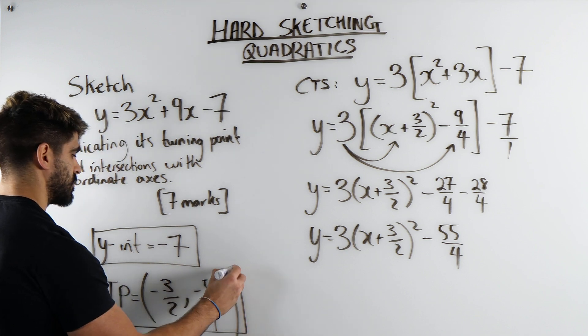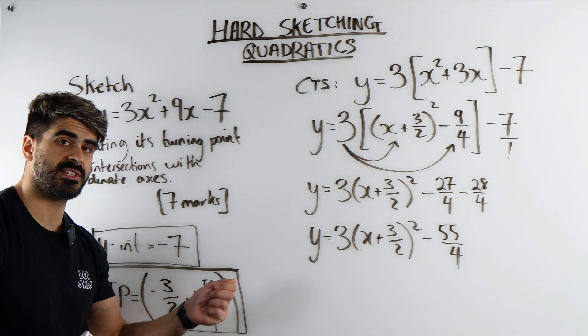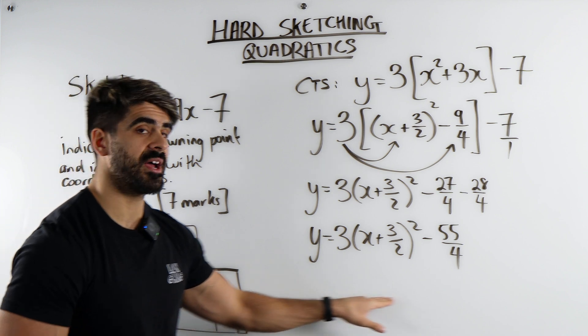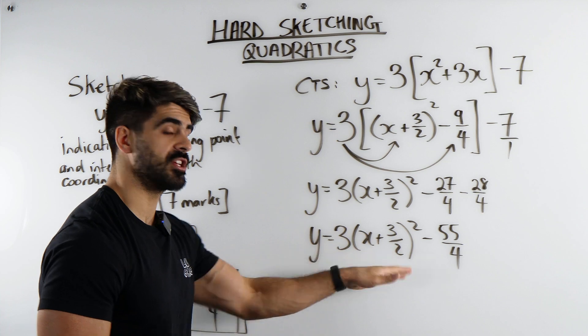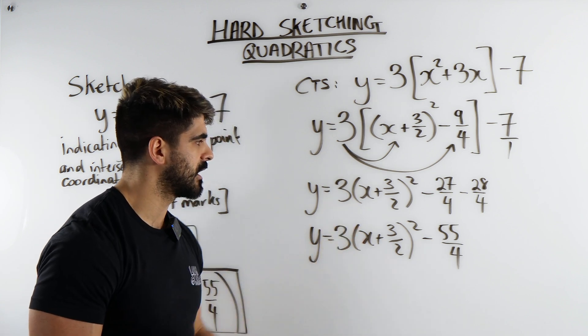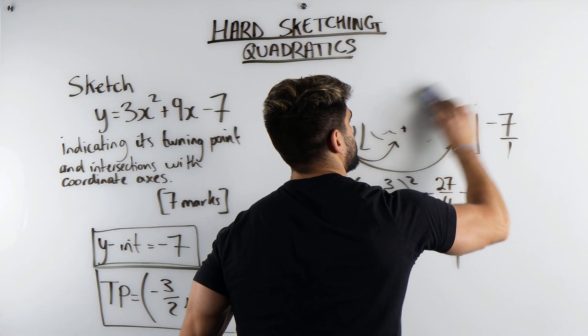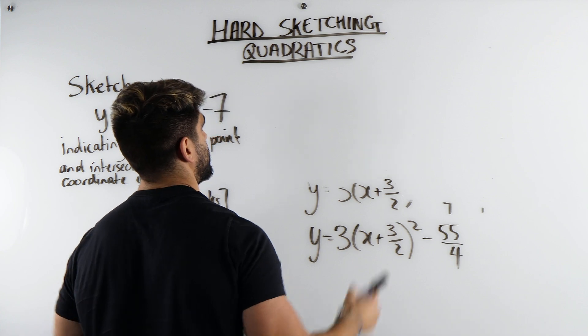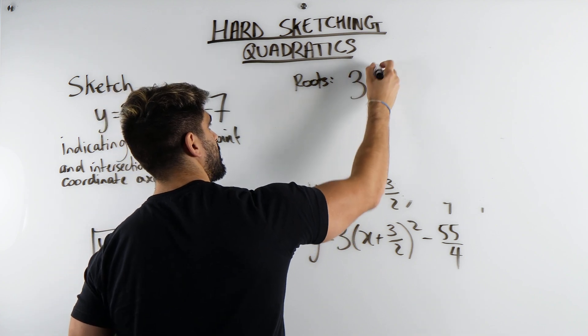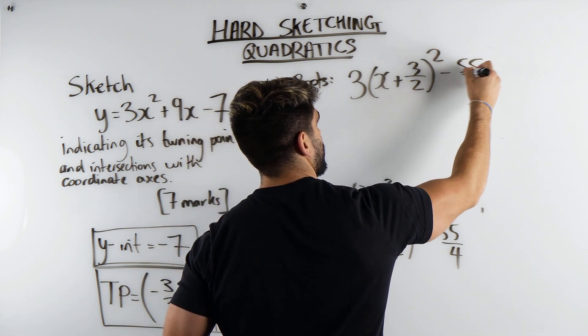Now, we need to find the roots. And this is again why this is a very tough non-calculator paper, because this is not going to give us nice numbers. It does not factorize. This will not factorize. So this is why I always do this first, because we can use this to find the roots. Because remember, I indicated right at the beginning to find the roots, we make y equals 0. So we're going to make y equals 0 and we're going to rearrange. So let's do that. I'm just going to rewrite the completed square up here, then I'm going to rub the rest out. So for the roots, we're going to have 3(x + 3/2)² - 55/4 = 0.